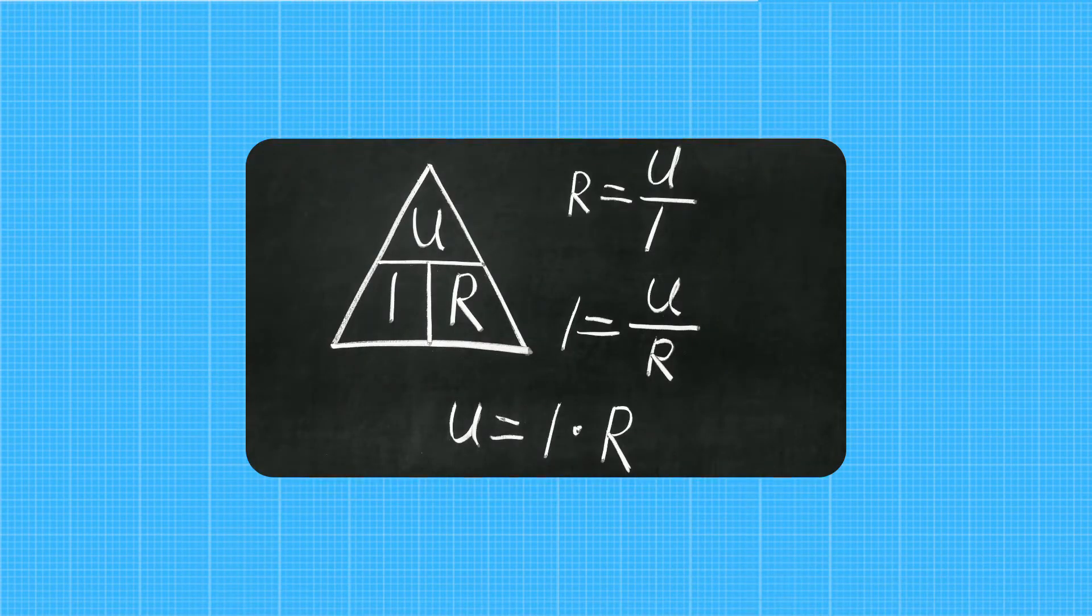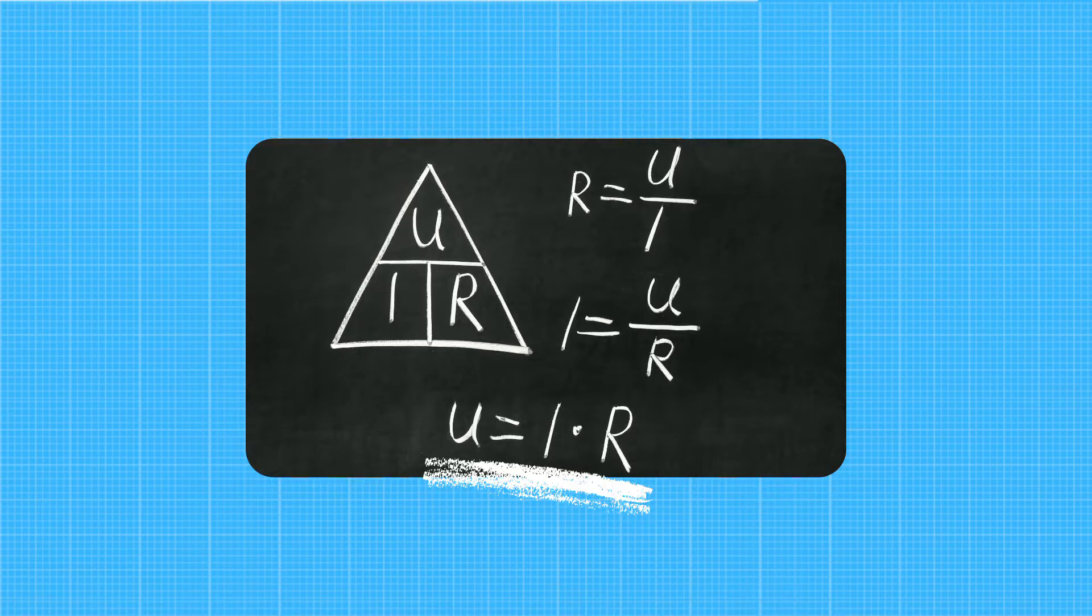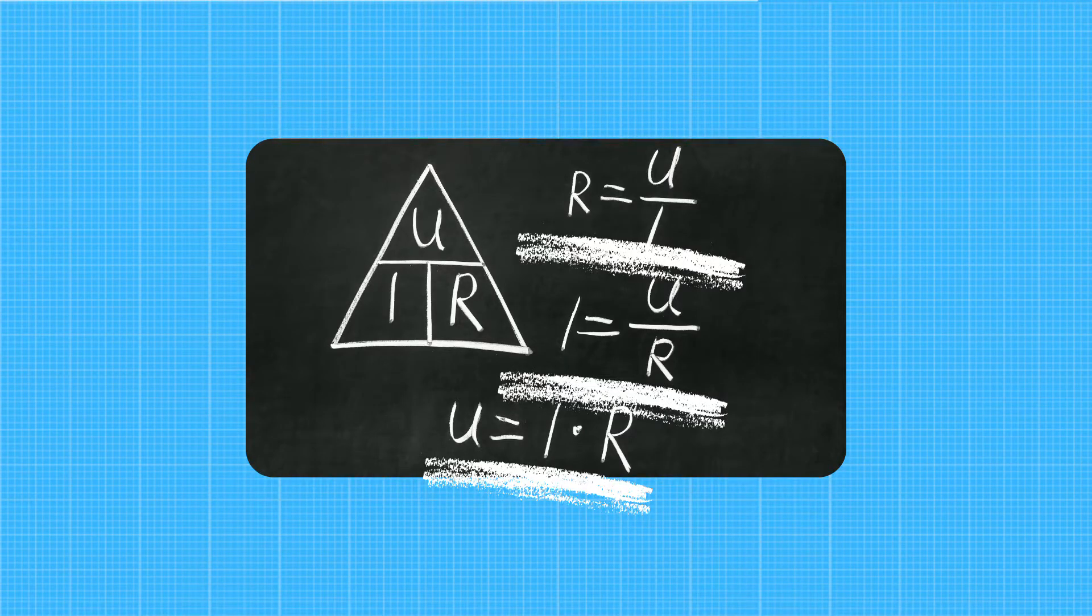There are two variants of Ohm's law with multiple applications. The first variant can be used to calculate the voltage drop across a known resistance. The second variant can be used to calculate the resistance of a known voltage drop. And let's not forget the third combination for calculating current.